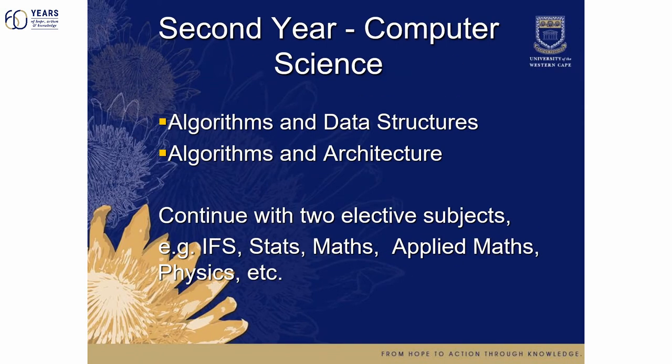In your second year computer science, you'll do algorithms and data structures, more algorithms, and computer architecture. You then continue with two elective subjects — computer science plus, for example, information systems, statistics, mathematics, applied mathematics, or physics. So you'll have three subjects in your second year.